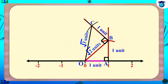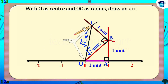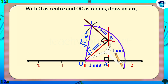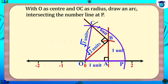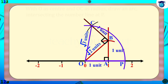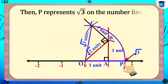Now root 3 is on the hypotenuse of right triangle OBC and we have to bring it onto the number line. For that, with O as center and OC as radius, draw an arc intersecting the number line at P. Then P represents root 3 on the number line.